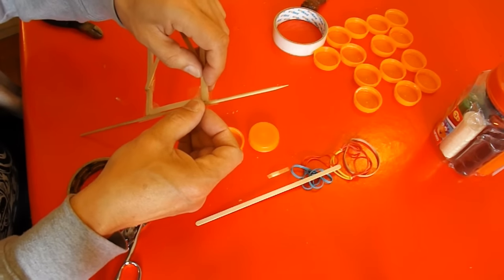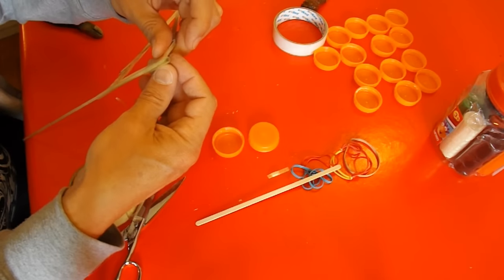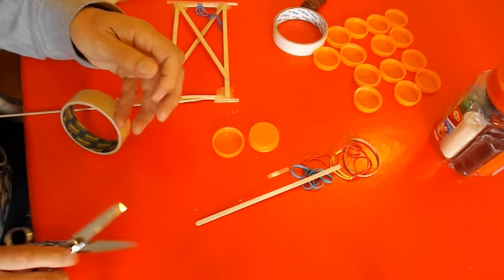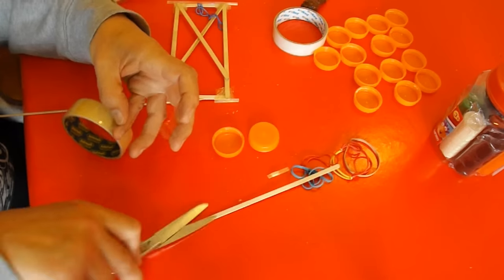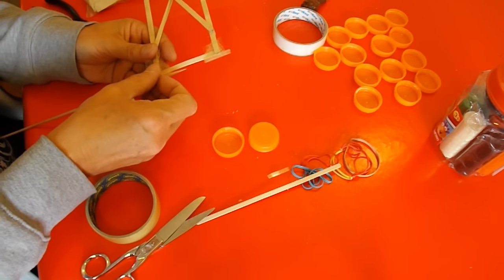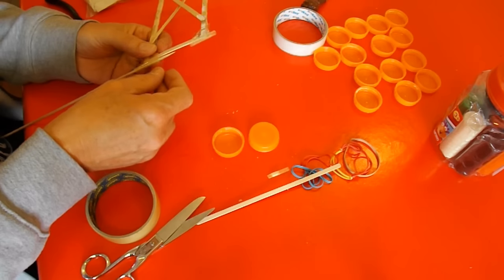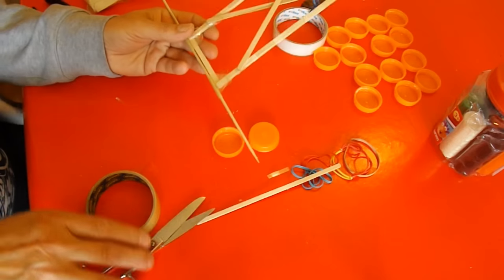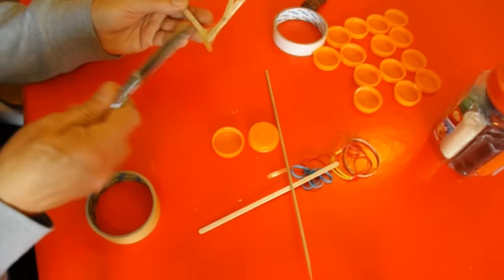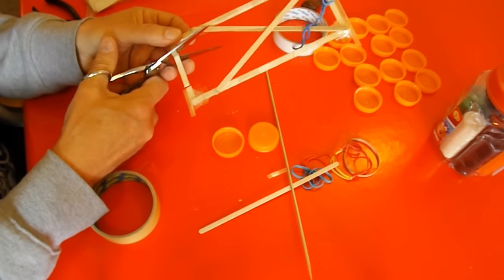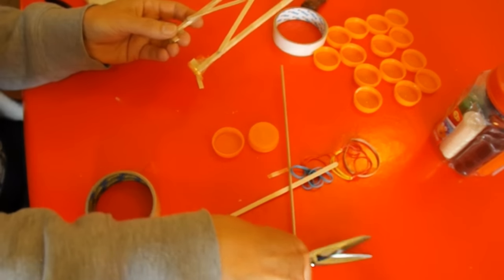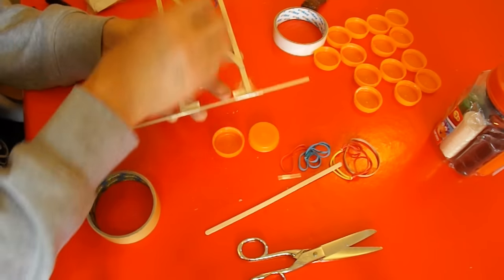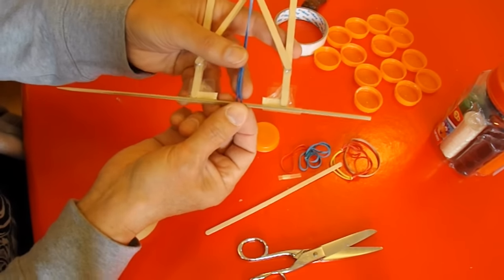I might want to add a bit of extra tape just to strengthen it a bit more. Right, now we need to cut the middle out so that we can attach the rubber band to the axle.